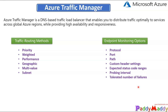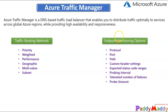You can also configure the tolerated number of failures, which specifies how many failures the Traffic Manager probing agent tolerates before marking an endpoint as unhealthy. The range is zero to nine — zero means a single failure marks the endpoint unhealthy. The default value is three. Probe timeout can also be configured, specifying how long the probing agent waits before considering a check a failure, and based on that it reports the monitoring status as healthy or unhealthy.